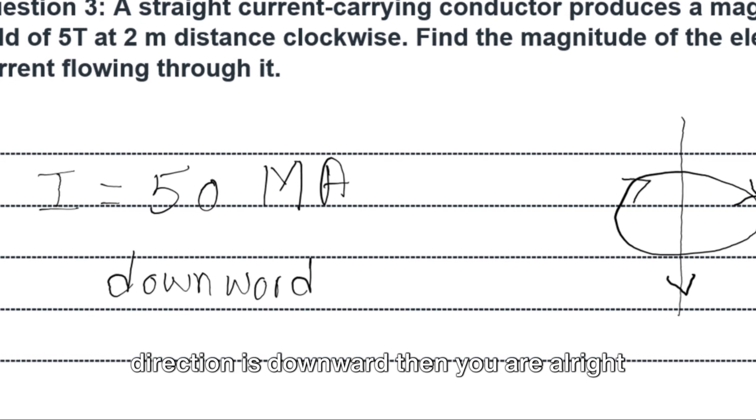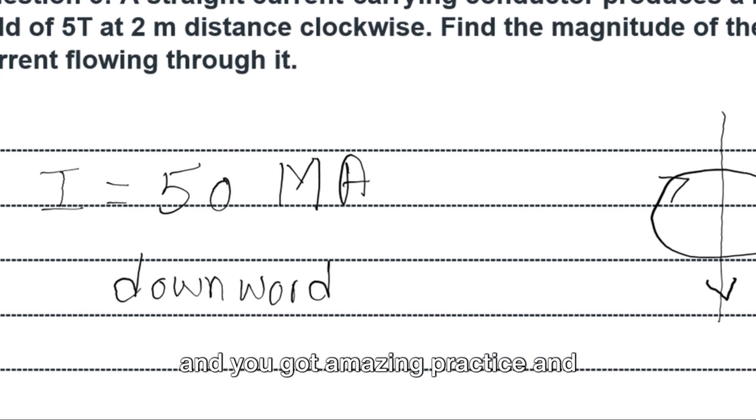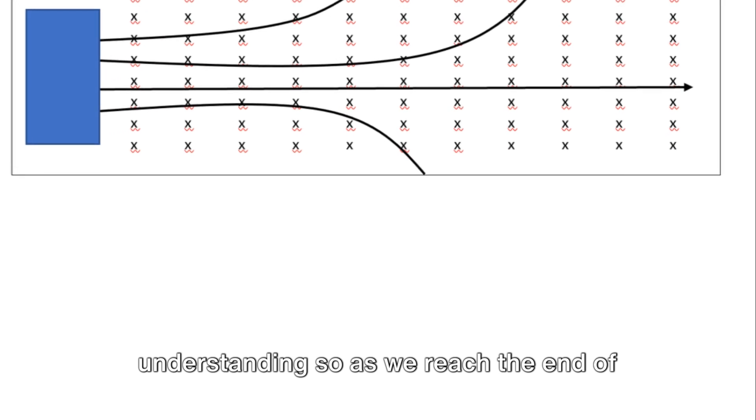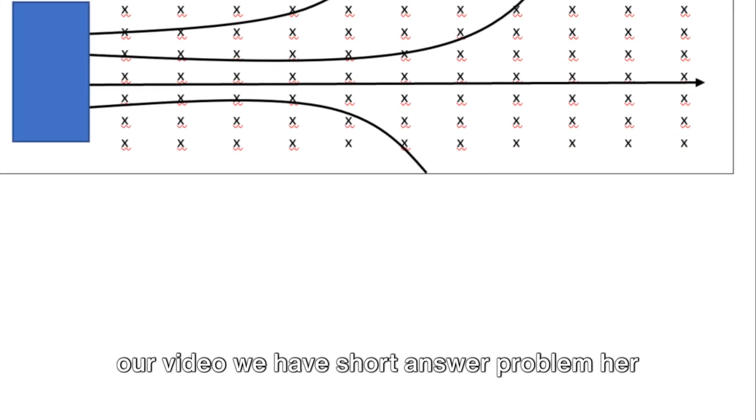To determine the direction. If your answer is 50 mega amperes and the direction is downward, then you are right and you got amazing practice and understanding. As we reach the end of our video we have a short answer problem here.